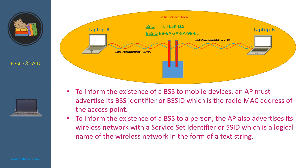For example, to join Laptop B to this wireless network, first a person must log in to Laptop B and connect it to the wireless network using the SSID IT Life Skills. After being connected to the wireless network, Laptop B figures that it needs to send the joining request to the access point via the BSS ID, which is this MAC address. If the AP grants the access, the laptop will join the wireless network.